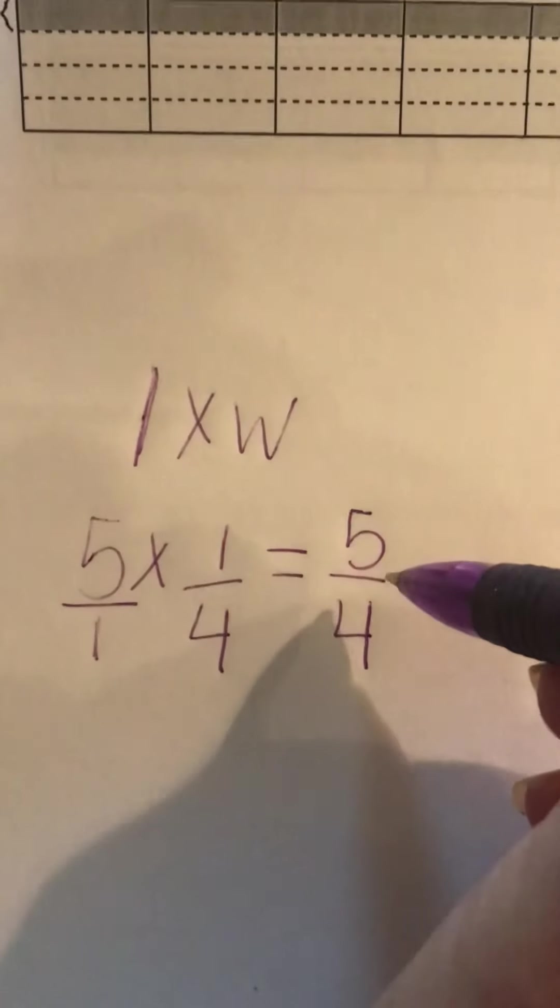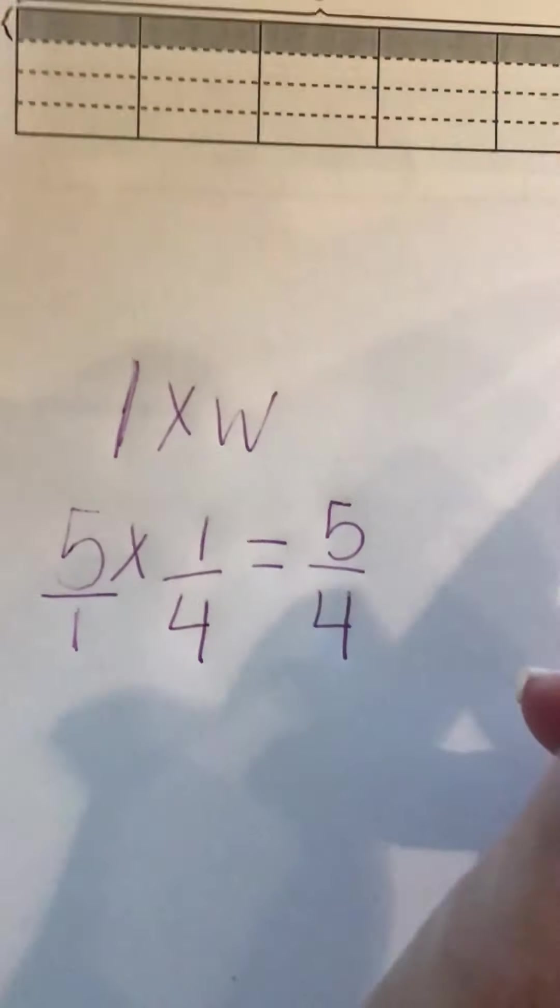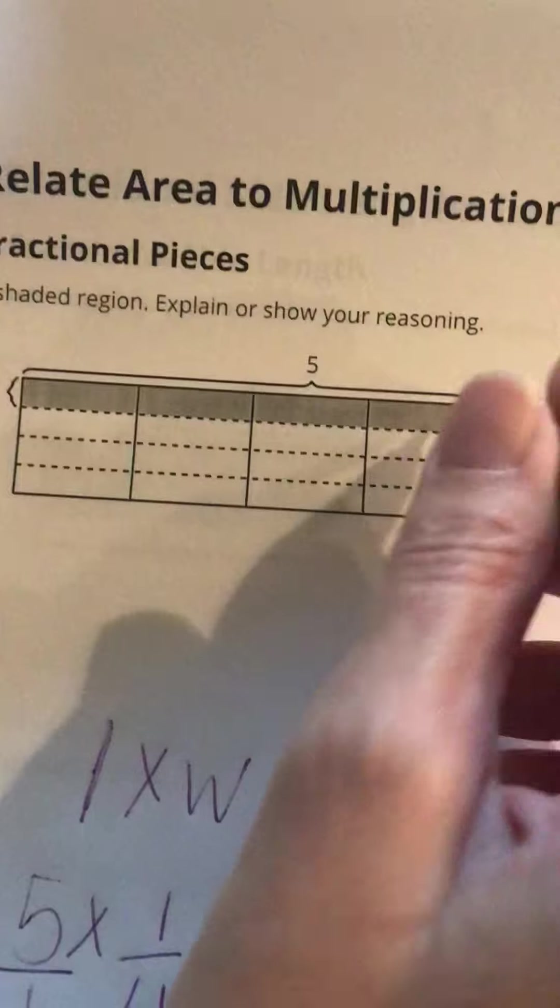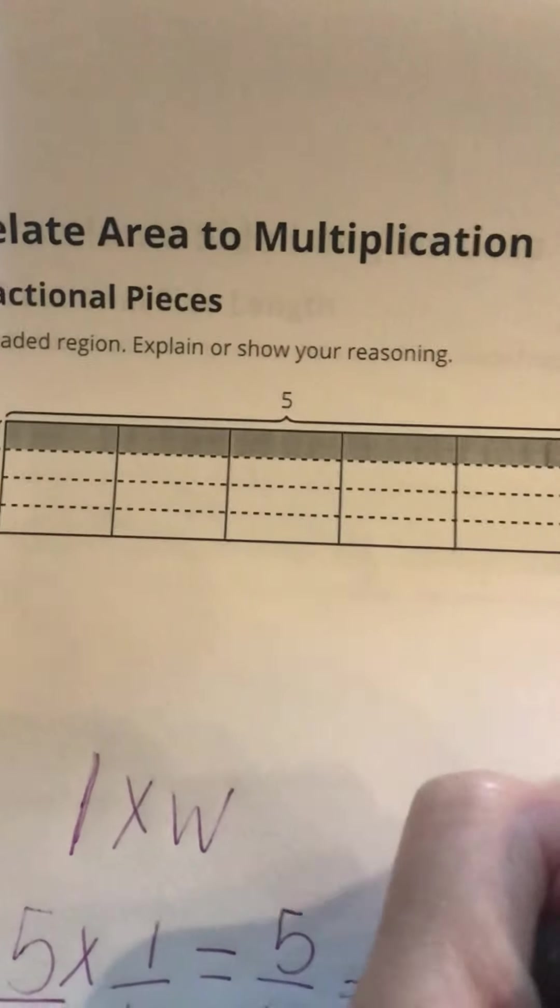So that's another way you can think of this as being 5/4. Now I could have also counted these. Since these are fourth-size pieces, I've got 1, 2, 3, 4 of them, so that makes one whole, and then I've got 1/4 left over.